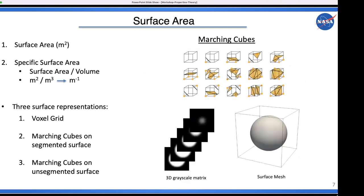Instead, we use marching cubes, which is one of many isosurface triangulation techniques. You go into each voxel, determine whether the surface cuts through it, and represent that using triangles — resulting in a very clean surface mesh. There are also two types of surface area: the raw value in meters squared, and the more intrinsic specific surface area, which is surface area per unit volume, with units of inverse meters.